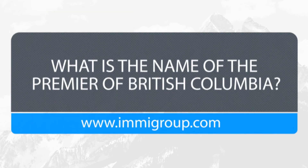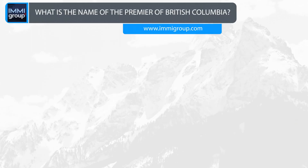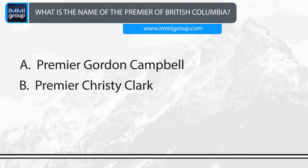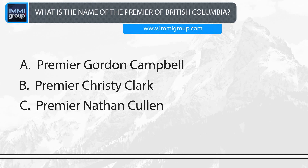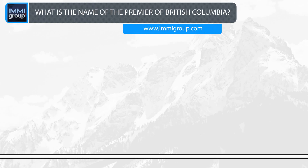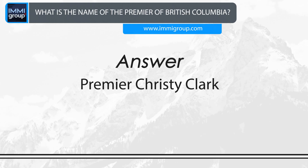What is the name of the Premier of British Columbia? A. Premier Gordon Campbell. B. Premier Christy Clark. C. Premier Nathan Cullen. D. Premier Elizabeth May. Answer: Premier Christy Clark.